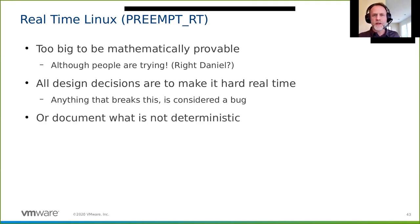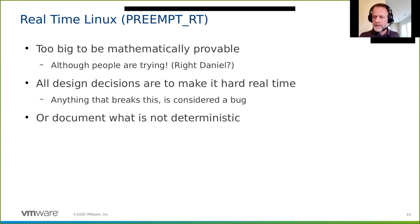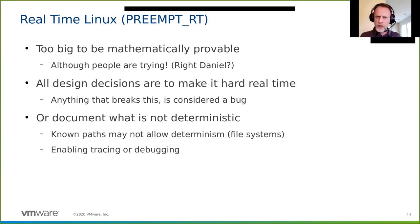There are some known exceptions—places in the code where unbounded latency can occur, but they're well-defined. We document them: avoid doing this and your system will run perfectly fine. There are some places in the file system that could cause missed latencies, such as writing to disk. Also, some tracing or debugging operations can kick off features known to break deadlines—you can compile those out too.